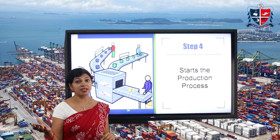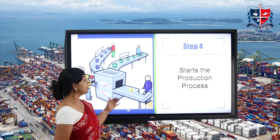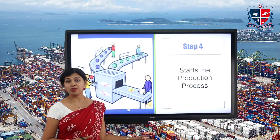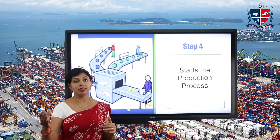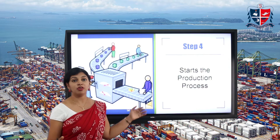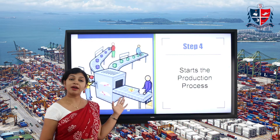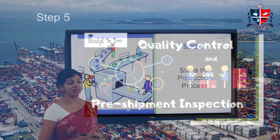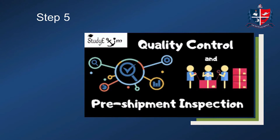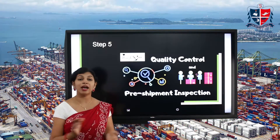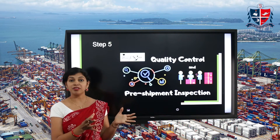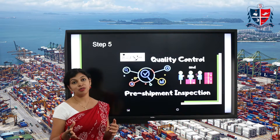Once the negotiation has reached a good deal and the importer has finalized the agreement, the exporter can start the production process, because you have to make your goods ready by the scheduled date. In the fourth step, you start the production process and finish it, so that the batch of goods is ready for export.